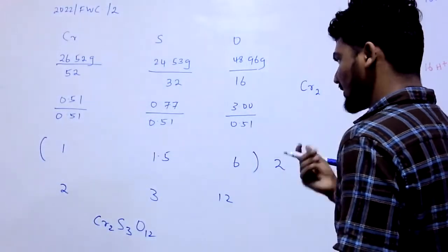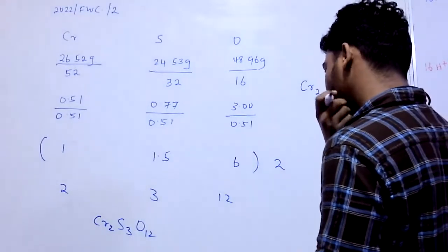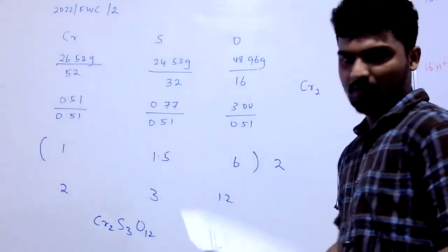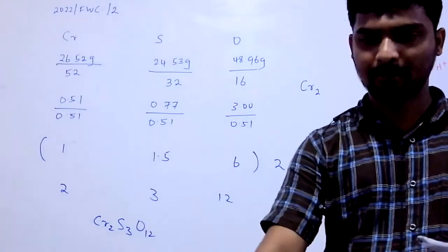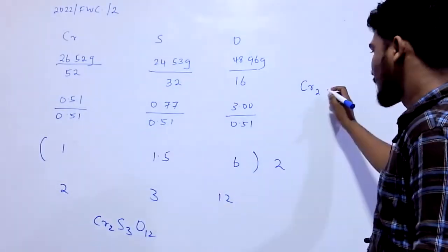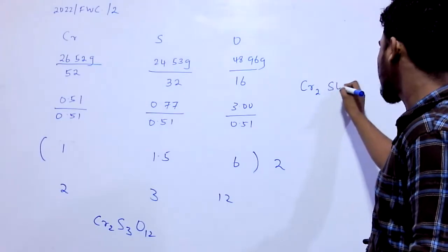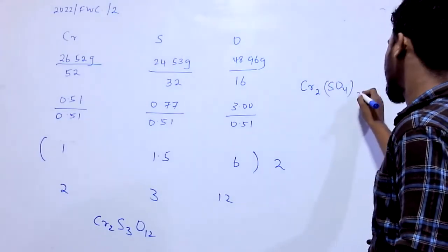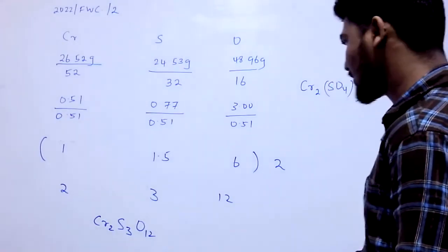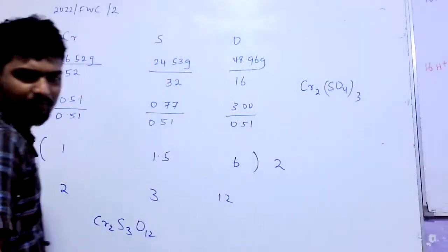CR2. CR2, SO4, TRICE. CR2, SO4, TRICE. That's the one. This is the name of the compound.